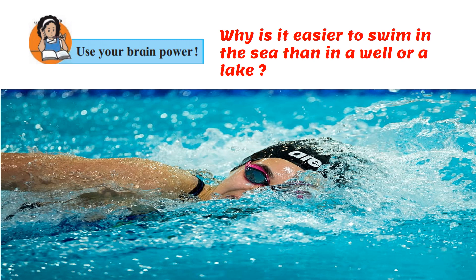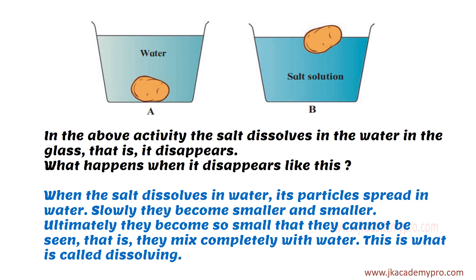Use your brain power: why is it easier to swim in the sea than in a well or a lake? When salt dissolves in water, its particles spread in the water, becoming smaller and smaller until they cannot be seen — they mix completely with the water. That is what is called dissolving. The salt is still present in the solution; it has dissolved into it.